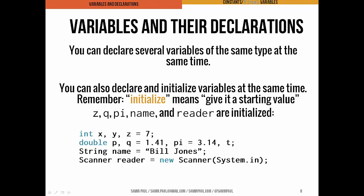A couple of shorthand things: you can declare a bunch of variables at the same time. Here we declare several ints, several doubles, and a String. We can also initialize values at this time. In this code snippet, the variables z, q, pi, name, and reader end up initialized — they get the values 7, 1.41, 3.14, Bill Jones, and the new Scanner object that we instantiated. Variables x, y, p, and t don't get starting values; they're still null until we initialize them later in the program.